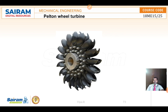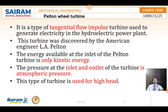The Pelton Wheel Turbine consists of buckets arranged on the circumference — on the periphery of the shaft. These are called runner buckets. They are arranged in a manner such that when water hits on them, the runner is rotated. It is a type of tangential flow and impulse turbine.